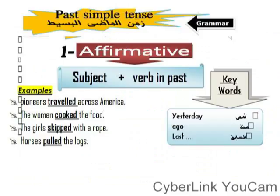Let's move to another part. We have here the past simple tense — زمن الماضي البسيط. It is formed with the subject (he, she, it, they, we, you, I) plus the verb in the past.